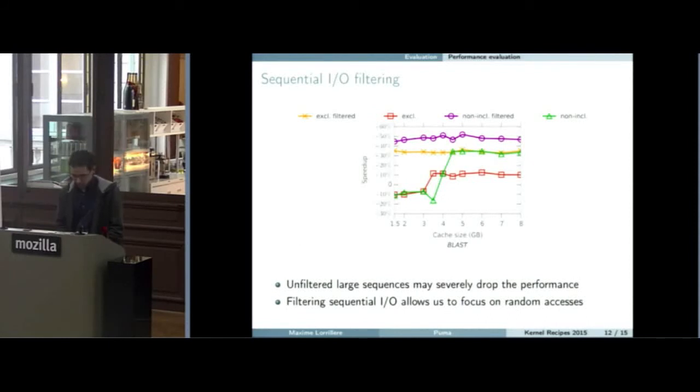With sequential I/O filtering - in this graph, we show for BLAST, a biologic tool that has a large part of its workload that is sequential. We can see that when we filter all the sequential I/O, we only send a small part of the dataset that is really randomly intensive to the cache. And we are able to improve the performance here by up to 40%.